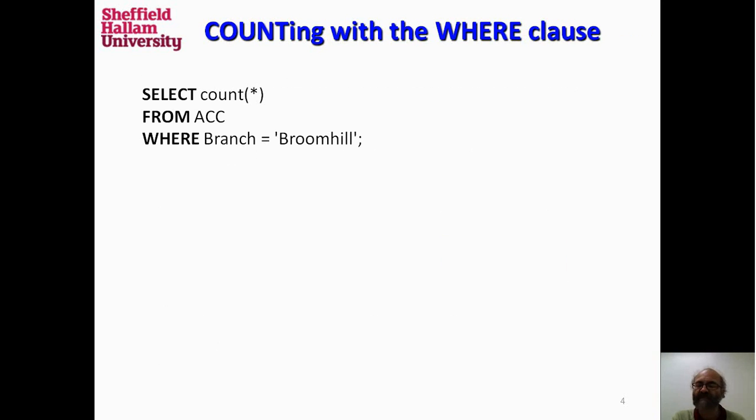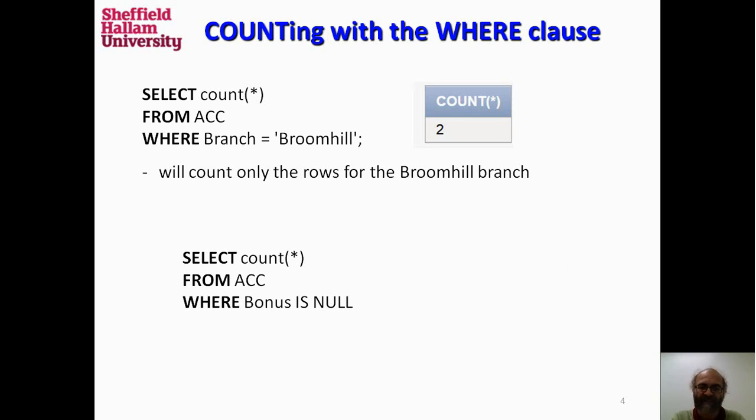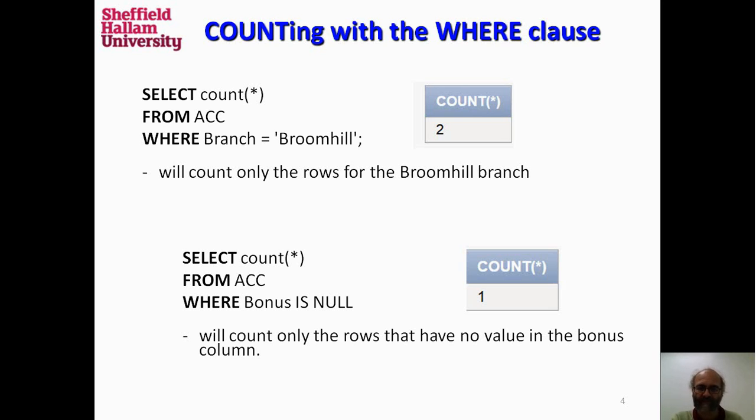With the WHERE clause, counting counts only those rows of data that we have selected. So, we count everything where the branch is Broomhill. That is two results. Or we could count everything where there is no value for bonus, no known value for bonus, where bonus is null. That would give us one result.